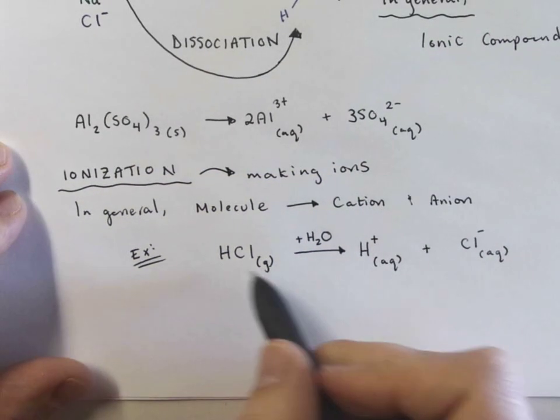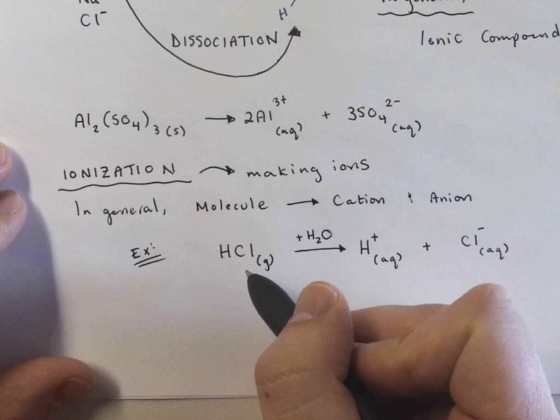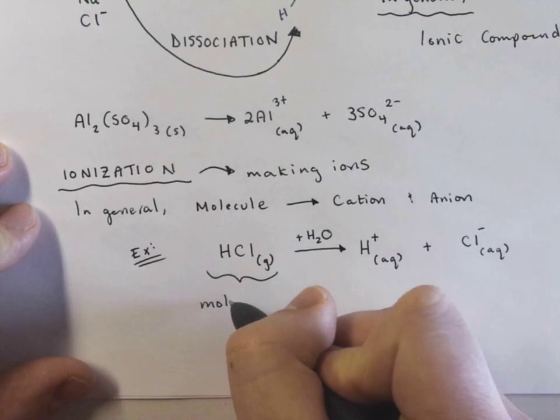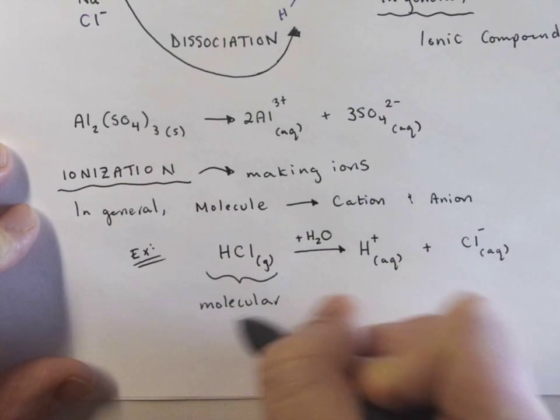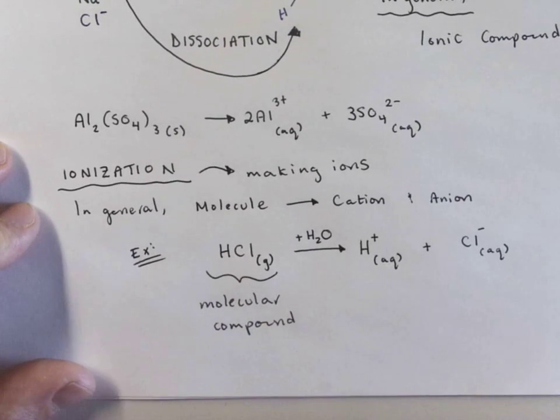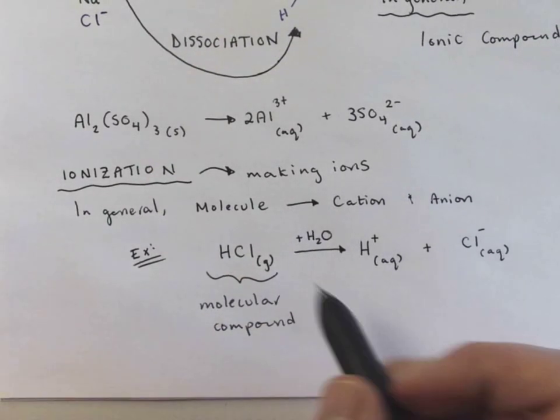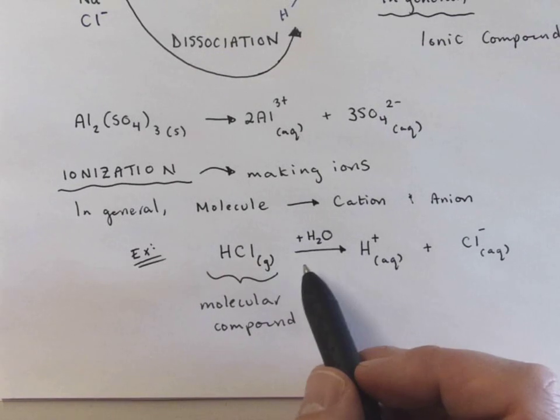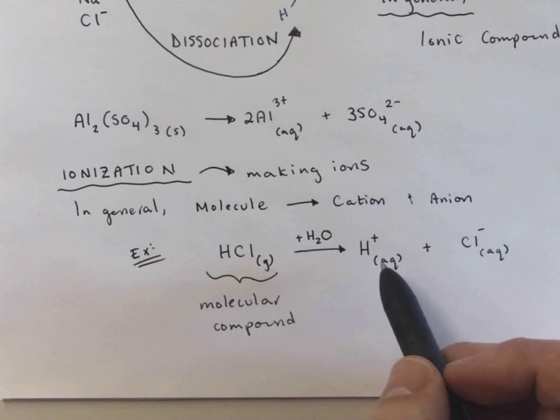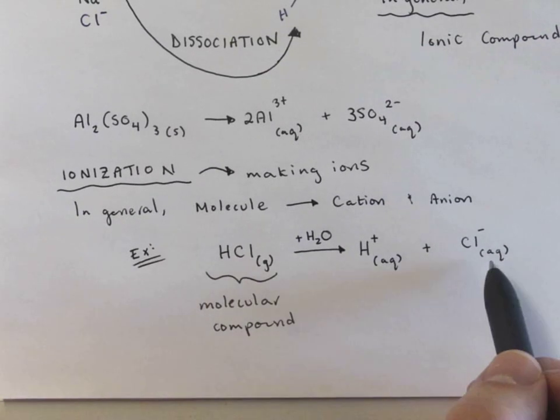Ionization really just means we're making ions. So we're starting with a neutral compound, technically a molecular compound. So we start with a molecular compound. And we ionize. So when we're in the presence of water, this compound will ionize. It will turn into hydrogen ions and chloride ions.